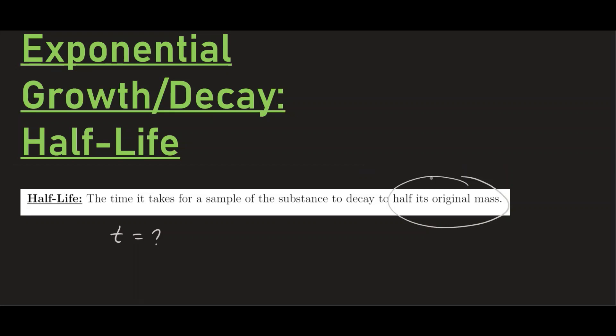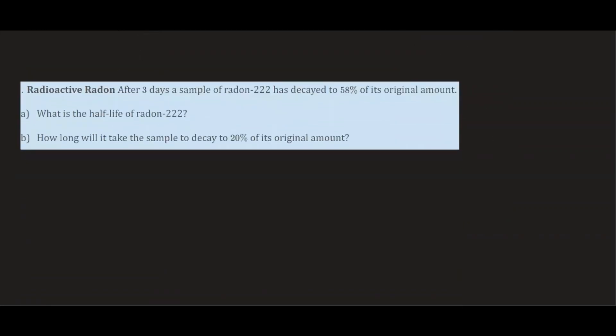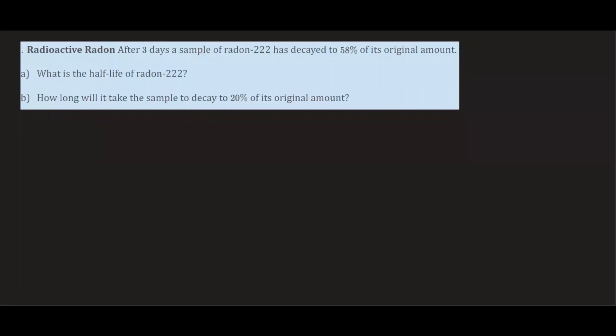Let's take a look at our first example. We have radioactive radon: after three days, a sample of radon-222 has decayed to 58% of its original amount. This will help us find the rate, and then we can answer part A and part B. We know the element decayed to 58%, or 0.58 of the original amount, in three days.